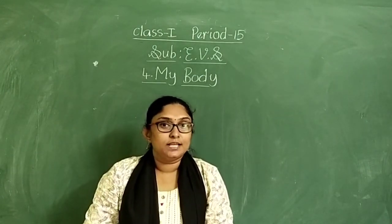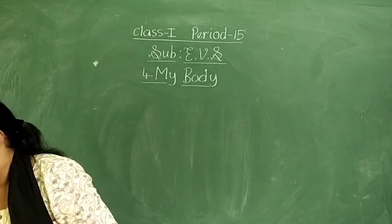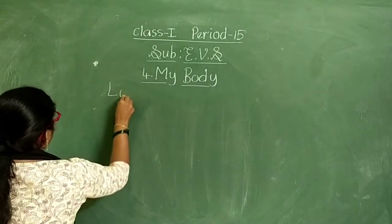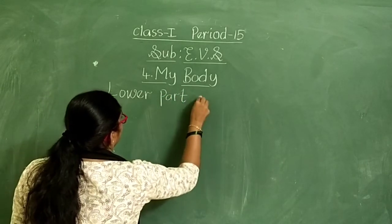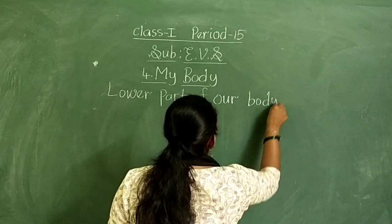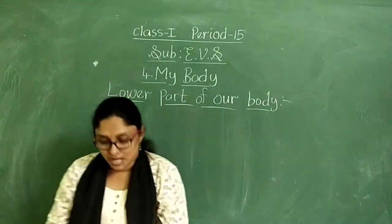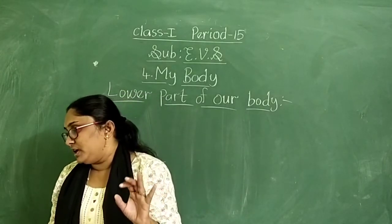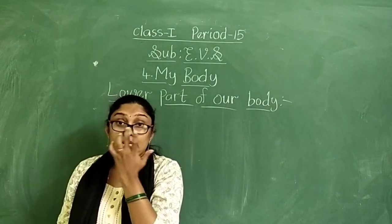Today let us learn about the continuation of my body — that is, we should learn about the lower part of our body. Our legs are in the lower part of our body. Each leg has a knee and a foot. Each foot has five toes, an ankle, and a heel.